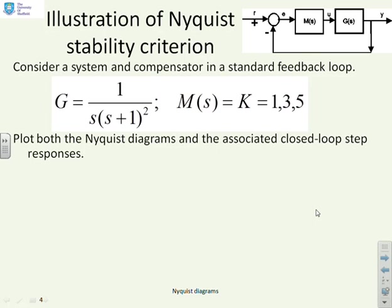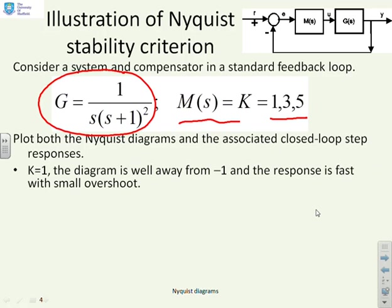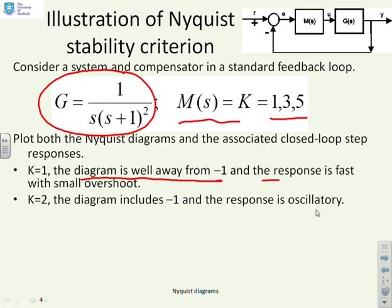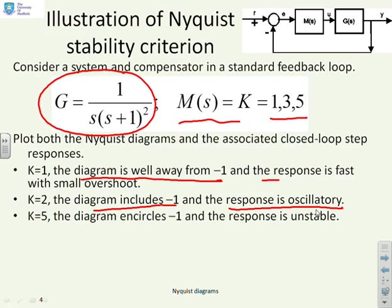We're going to go straight to the illustration. We'll take a transfer function g and try a few different compensators: 1, 3, and 5. We'll plot the Nyquist diagrams for each and the associated closed-loop step responses. When k equals 1, the Nyquist diagram is well away from minus 1 and the response is good. When k equals 2, the Nyquist diagram goes through minus 1 and the response is oscillatory. When k equals 5, the diagram goes around minus 1 and the response is unstable.